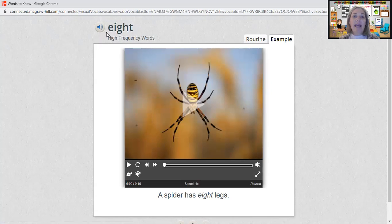The next word is 'eight.' You spell eight E-I-G-H-T. The spider in the picture has eight legs. One, two, three, four, five, six, seven, eight.